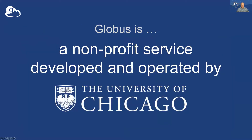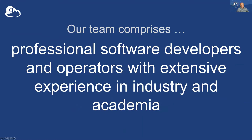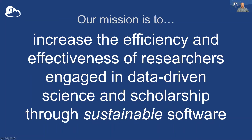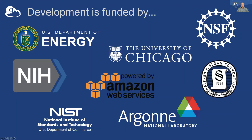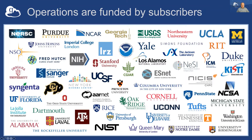Globus is a service built and operated by the University of Chicago. Most of us on the team came out of industry — we're professional software people who've been running this enterprise to help scientists do their work more efficiently, taking data management off the table as a barrier to better science. Globus is fairly widely deployed. We get funding from federal agencies and also have a sustainability model that relies on subscriptions from institutions that support us on a recurring basis.